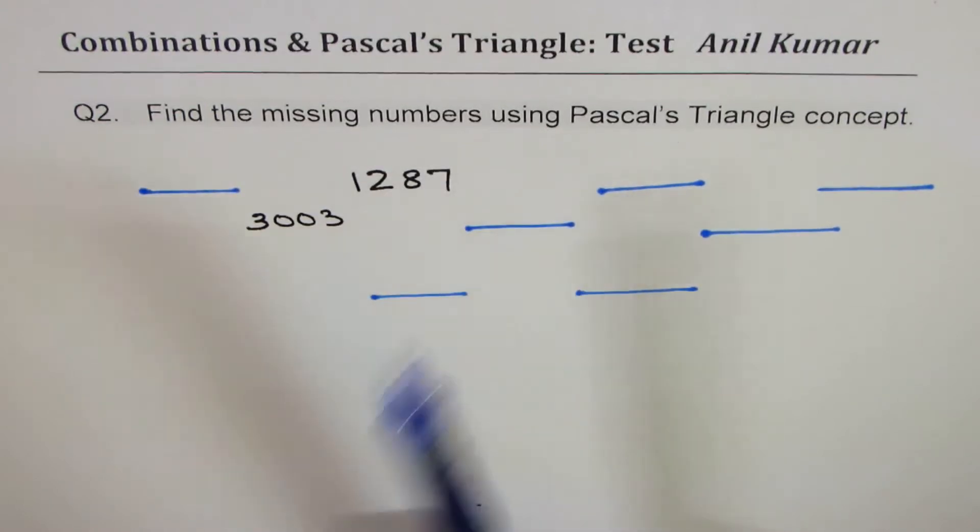Now normally we'll always give you three numbers. In this particular case only two numbers are given to you and you have to find all the missing numbers. Now think about it and then solve the question.